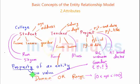So every attribute or property of an entity can take its values using these two things, that is a domain or a range.